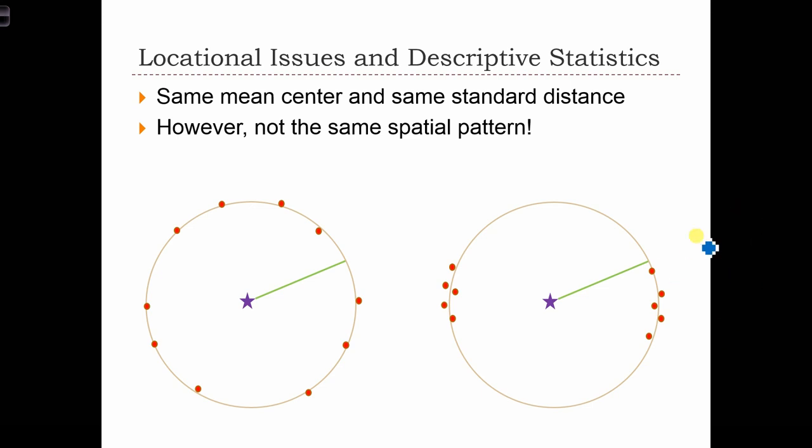So do you recall which kind of spatial statistic we could use to differentiate between the dispersion patterns of these two statistics? If you said standard deviational ellipse, you're right. On the left-hand side, if we were to calculate the standard deviational ellipse, we would end up with an ellipse that very closely matches the shape of the standard distance circle, because the dispersion away from the mean here happens evenly in all directions.